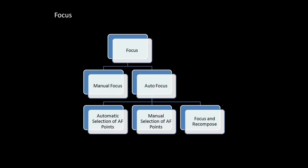This is a classification of different ways in which you can focus. Broadly we have manual focus and autofocus. Autofocus is further classified into three categories: automatic selection of autofocus points, manual selection of autofocus points, and finally focus and recompose. We will discuss each one of them in detail later in the video, including the pros and cons of each technique and the best technique to use.